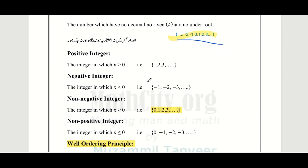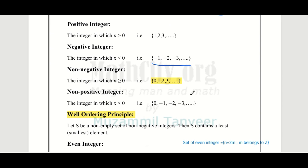We will discuss positive integers: the integers in which x is greater than 0. So if we put numbers greater than 0, we get 1, 2, 3 up to so on. This is a subset of the set of integers. If we talk about integers where x is less than 0, that set is minus 1, minus 2, minus 3 up to so on — we call these negative integers.